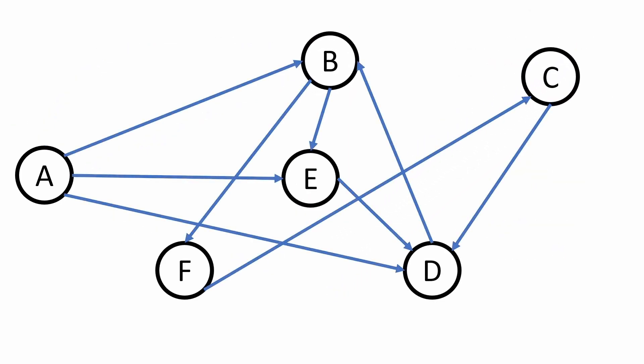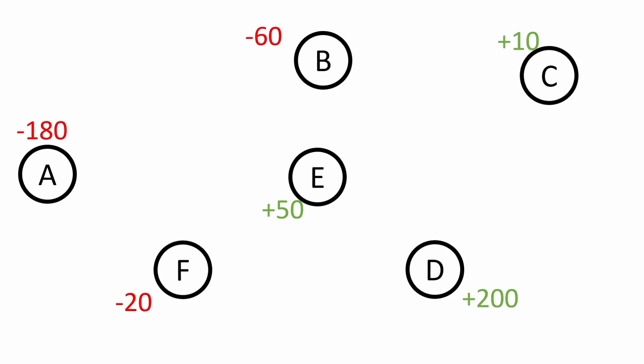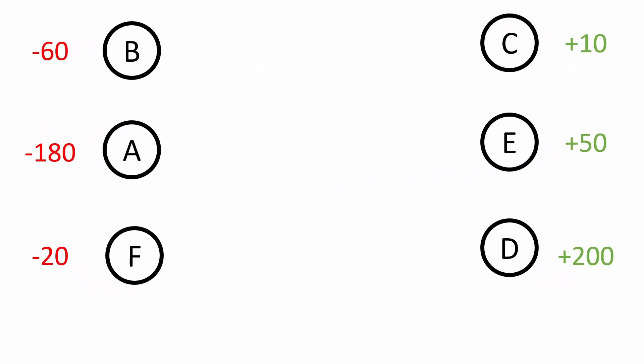Let's apply this to a more complicated example with six nodes and many edges. Instead of worrying about the transactions at all, let's just calculate the invariant scores: minus 180, 60, 10, 250, and minus 20. Now we don't need to worry about the edges — we reformat into nodes on the left wanting to give out money and nodes on the right wanting to receive. Starting from node B, which wants to pay out 60 rupees, we pay 10 rupees to C since C needs exactly 10 rupees.